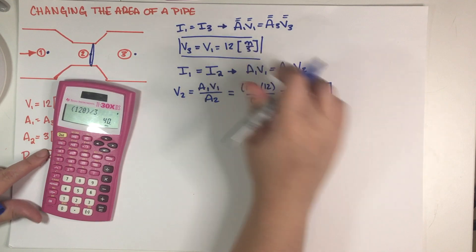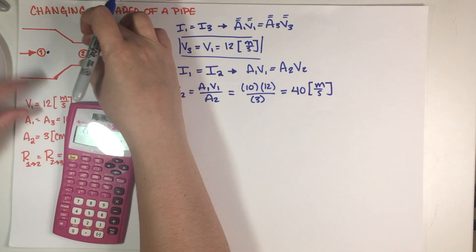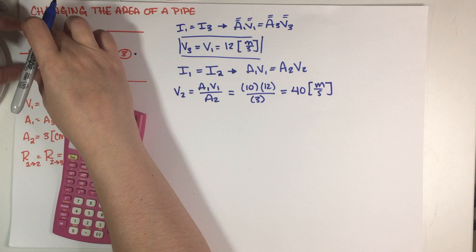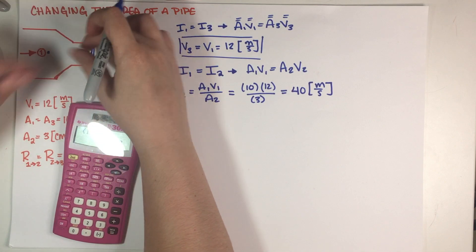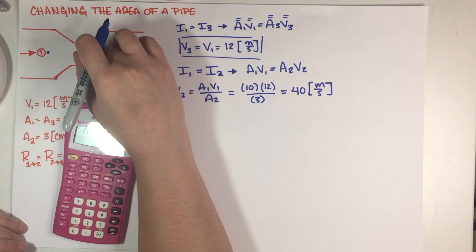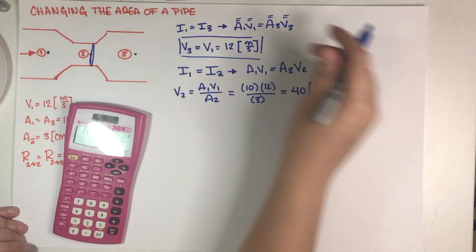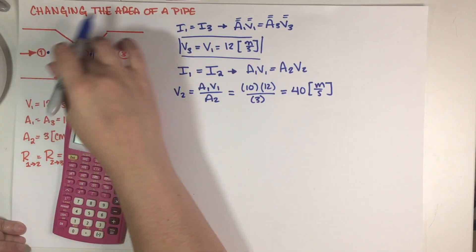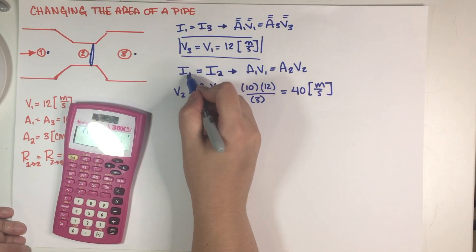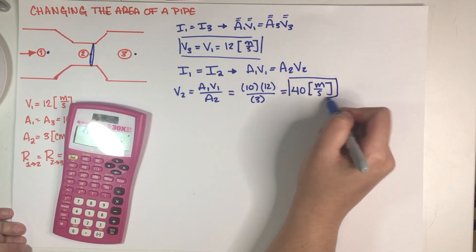Which makes sense that this should be greater than this because if this is smaller and you need the same amount of air flowing over here then it needs to go faster, because otherwise where is it going? So the smaller the area the faster it needs to go, so final answer 40 meters per second.